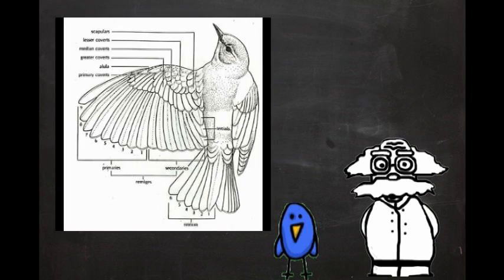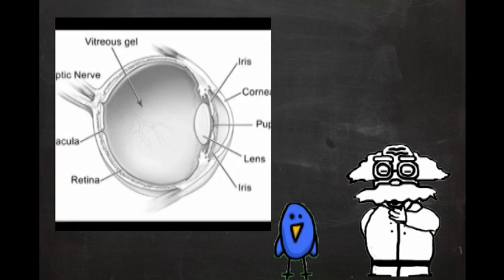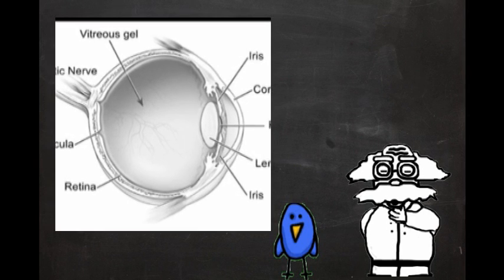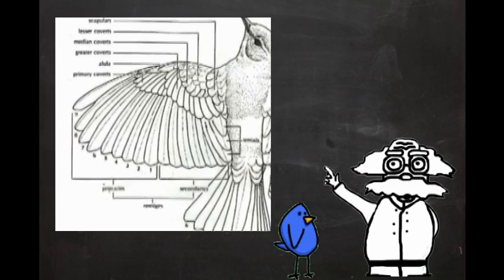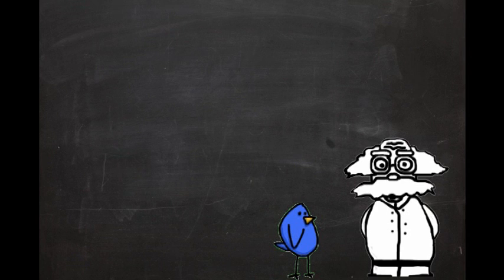But what about the wings and eyes I mentioned before? Do we know of any examples of eyes that are less complex than human eyes? Do we know of any creature that has wings or partial wings that cannot fly? Why, yes! The gradual development of wings and eyes can be observed in many living forms today.